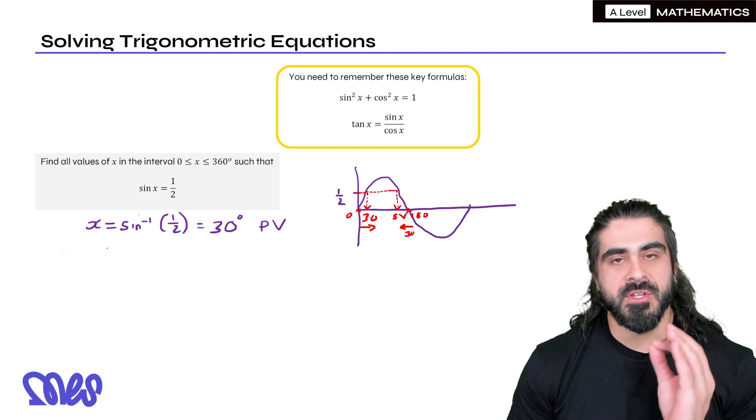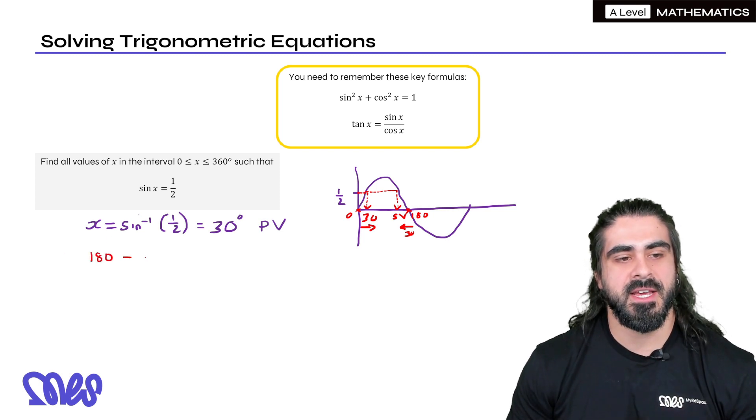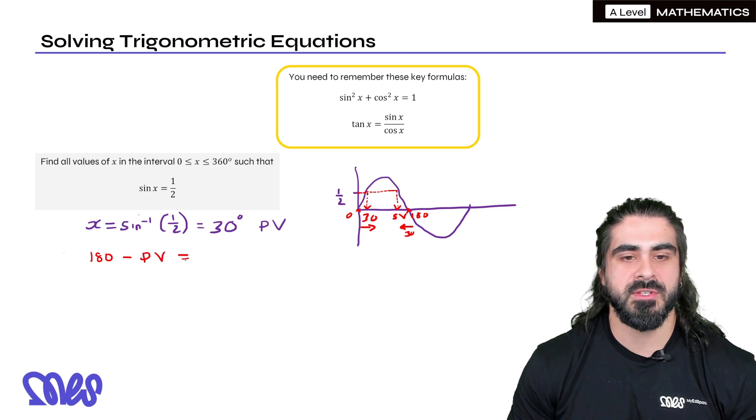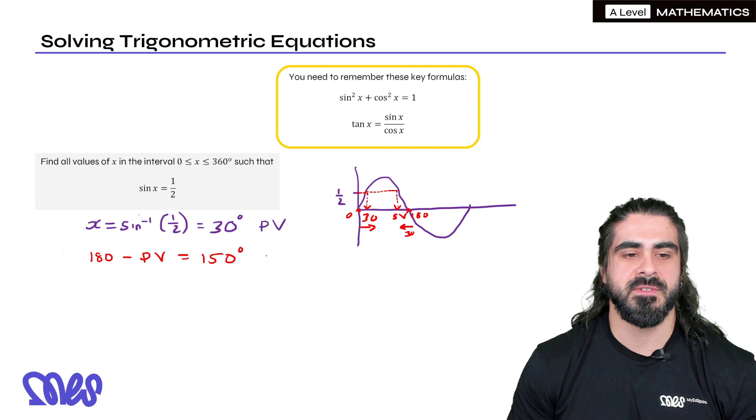The sine graph here starts at 0 and this primary value of 30 is 30 degrees in from 0. Then using the symmetry on the other side, we have 180 degrees. We need to go in by 30 degrees there to get what we call the secondary value. So in general, for the sine graph to find the secondary value, we do 180, take away whatever the primary value is. In our case, it was 30 degrees, which gives us 150 degrees.